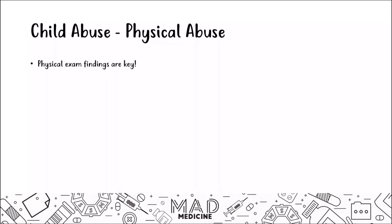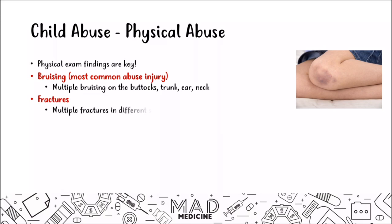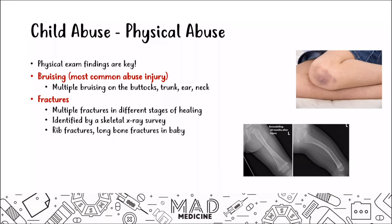As for physical manifestations of child abuse, the most important finding is bruising, located in multiple places — usually the buttocks, trunk, ear, and neck. This multiple bruising pattern should tip you off to physical abuse. You can also see fractures: multiple fractures in different stages of healing on a full-body scan, often located in the ribs and long bones of a baby.